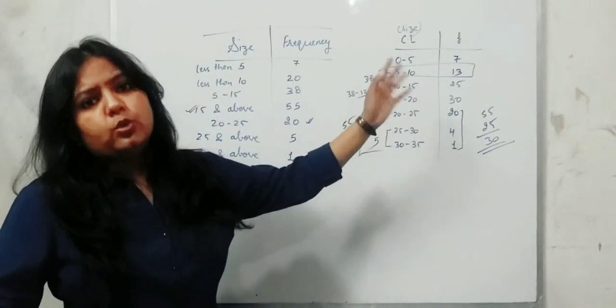Okay, so in the next class I will start main series topics. One more small point — suppose midpoints are given in a series. If midpoints are given and you need to find the CI: look at the difference between two midpoints — it is 10, so 10 divided by 2 = 5. Subtract 5 from the midpoint and add 5 to it. So for midpoint 5: 5 minus 5 = 0 and 5 plus 5 = 10; for midpoint 15: 15 minus 5 = 10 and 15 plus 5 = 20. This is how the series is framed from midpoints.